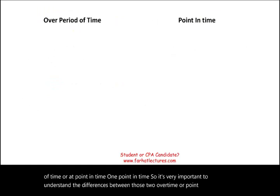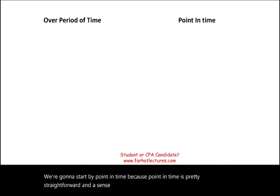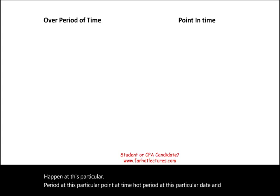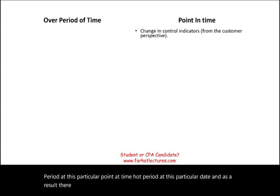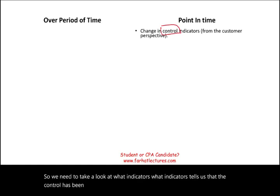We're going to start with point in time because it's pretty straightforward. Point in time means something happened at this particular date, and as a result there was a transfer of goods and services — a transfer of control. So we need to look at what indicators tell us that control has been transferred, and we're looking from the customer's perspective.